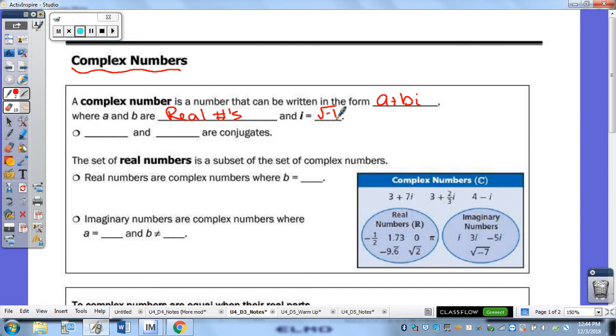And then another thing we're going to be needing is conjugates. A plus BI and A minus BI are both conjugates of each other. Remember, you just simply change that sign in the middle.